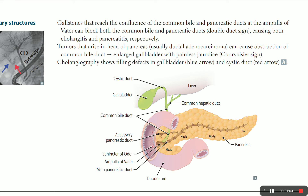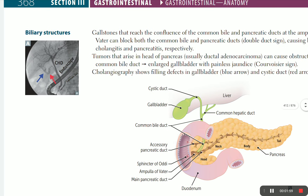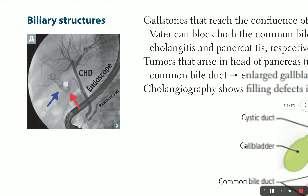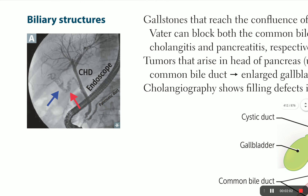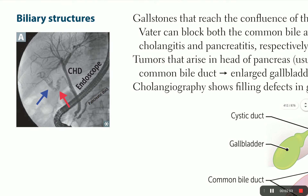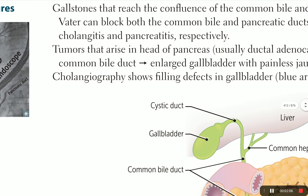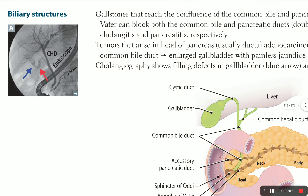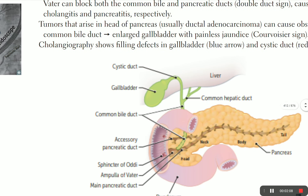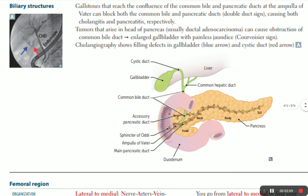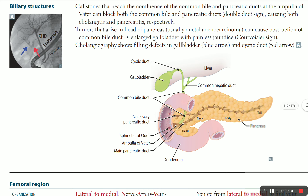Cholangiography shows filling defects in the gallbladder — indicated by the blue arrow here — and also in the cystic duct. This is how we diagnose it using cholangiography.